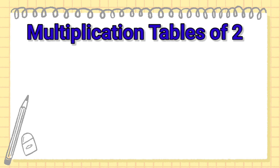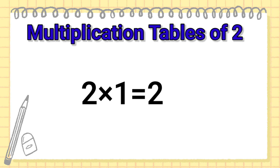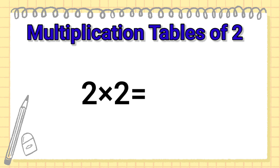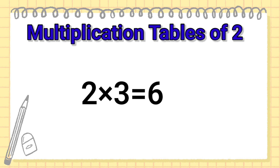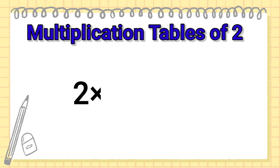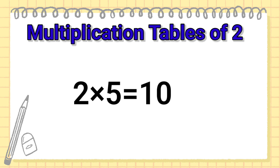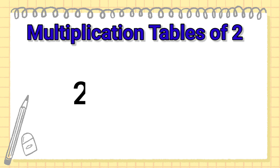Multiplication Tables of 2. 2 1's are 2, 2 2's are 4, 2 3's are 6, 2 4's are 8, 2 5's are 10, 2 6's are 12.